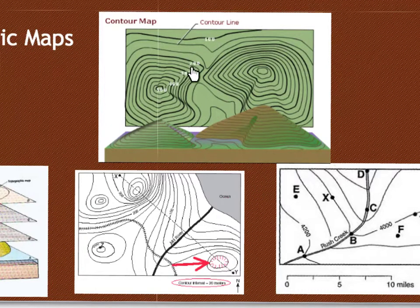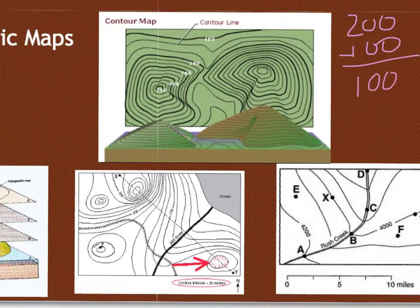So if we're looking at here to find the contour interval, we know we have 100 and then our next one is 200. So how many? You do 200 minus 100 equals 100. Now how many steps do we have to climb? One, two, three. 100 divided by three, so roughly that contour interval will be 33.3.